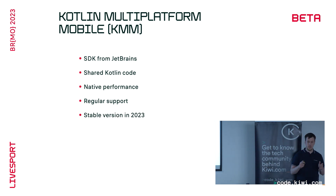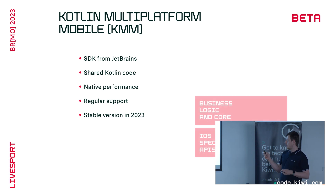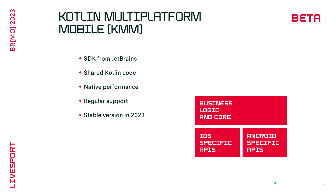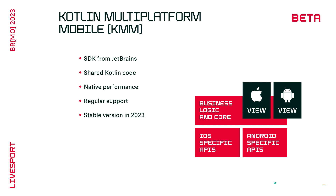JetBrains has promised to release a stable version this year. A Kotlin Multiplatform project consists of at least three parts: business logic and shared code in one shared space, plus iOS and Android code accessing platform-specific APIs. On top of that, you have UI layers — UIKit or SwiftUI on iOS, and Compose on Android.